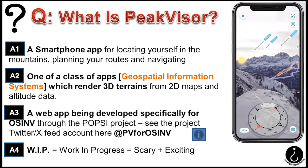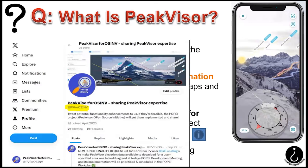We need other aspects of PeakVisor to be amplified for us. That's why there is a version being developed for open source research on the website — it renders 3D terrains from 2D maps and altitude data, which I've called a geospatial information system. Google Earth does the same thing. It's this web version that we're going to be talking about today. It's also being developed specially for open source investigation, led mainly from a Twitter/X account which manages that and puts out information.